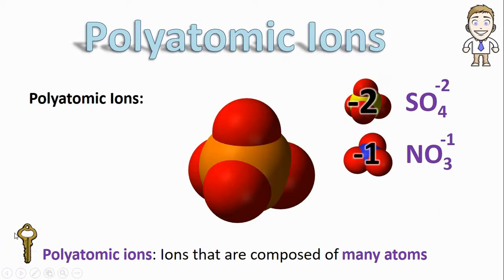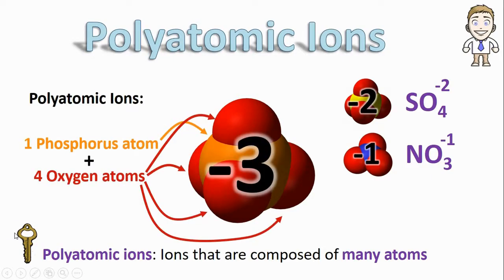And here's just one more example. This is a phosphorus atom surrounded by four oxygens, all with a minus three charge. The formula would, of course, be PO4 minus three.